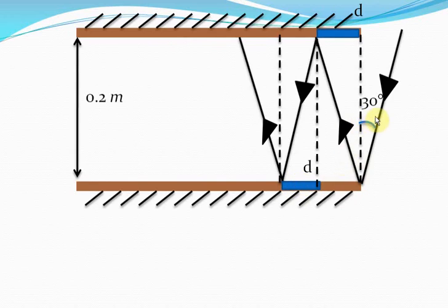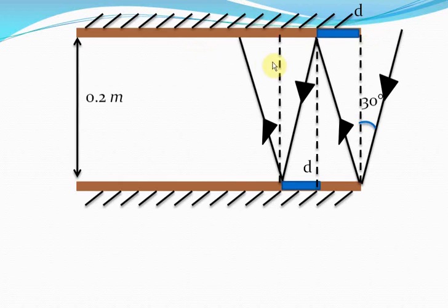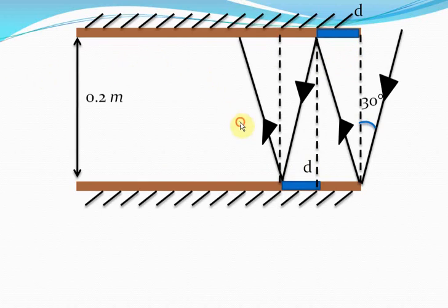This is 30 degrees, this is 30 degrees, this is also 30 degrees, this is also 30 degrees. So this triangle and this triangle will be congruent. In fact, all the triangles here will be congruent — because the angle is the same, the side length is the same, and the 90-degree angle is the same. So all the triangles will be congruent, which means this distance will also be D.